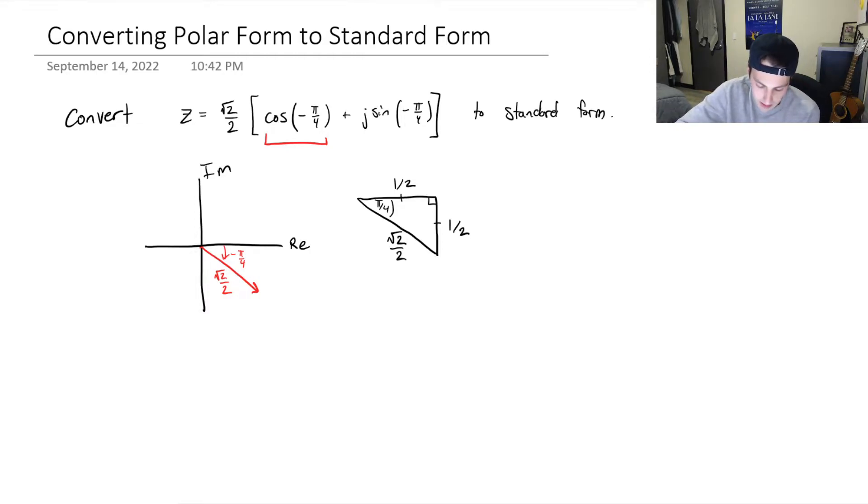So now, we've got z is equal to √2 over 2, and we can evaluate this now. Cosine of this triangle, we know that that is going to be adjacent over hypotenuse, which is half divided by √2 over 2. Notice that this is positive, because we are in the positive direction of the real axes, or the x.